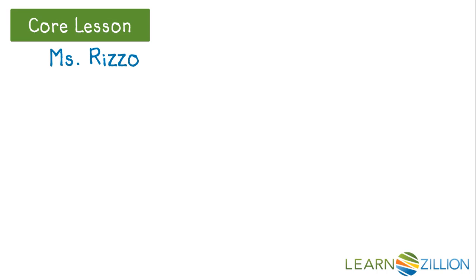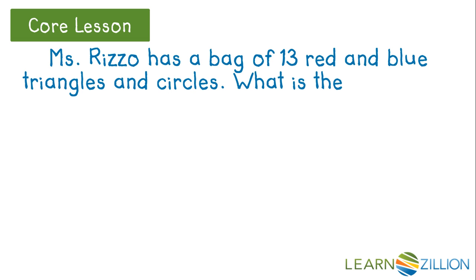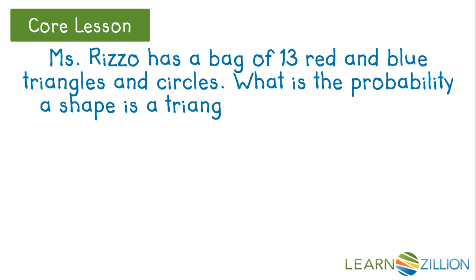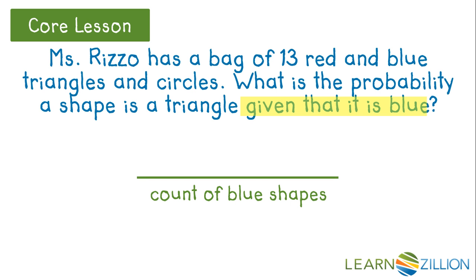Let's look at an example. Ms. Rizzo has a bag of 13 red and blue triangles and circles. What is the probability that a shape is a triangle given that it is blue? This question is really asking us to find a fraction. We already know all of the shapes we're interested in are blue. Once we determine how many blue shapes there are in that bag, that number will become the denominator. The question is really interested in how many of those blue shapes are a triangle — this count will serve as our numerator.